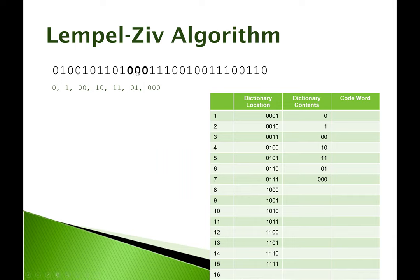As I was saying before I was cut off by Zoom: after we process this, 01 is unique. We look at this 0 — that's been done, a 00 has been done, so that's not unique. But a 000 is unique, so we write that down. And all along we've been recording these in our dictionary contents. These dictionary locations are just incrementing by one — by binary one each time.